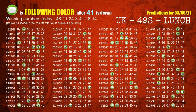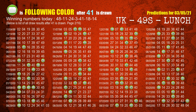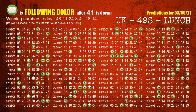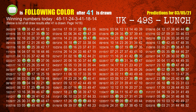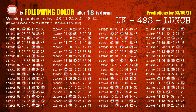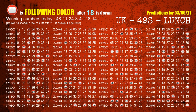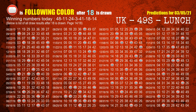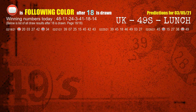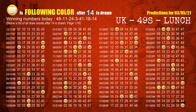The fifth winning number is 41. The most frequently following color is green when 41 is the winning number in the last draw. The sixth winning number is 18. The most frequently following color is red when 18 is the winning number in the last draw. The booster number is 14. The most frequently following color is yellow when 14 is the winning number in the last draw.